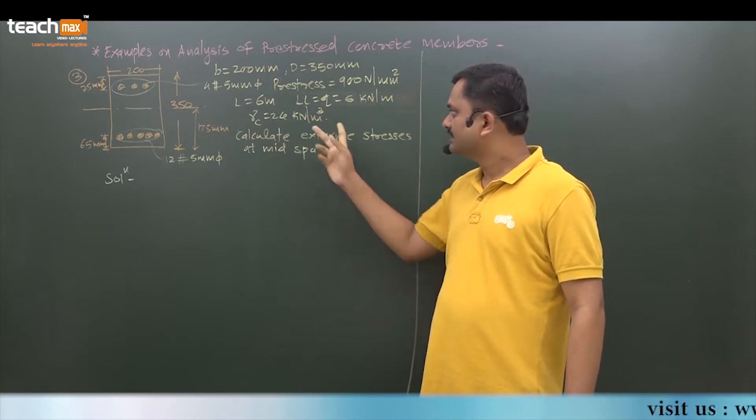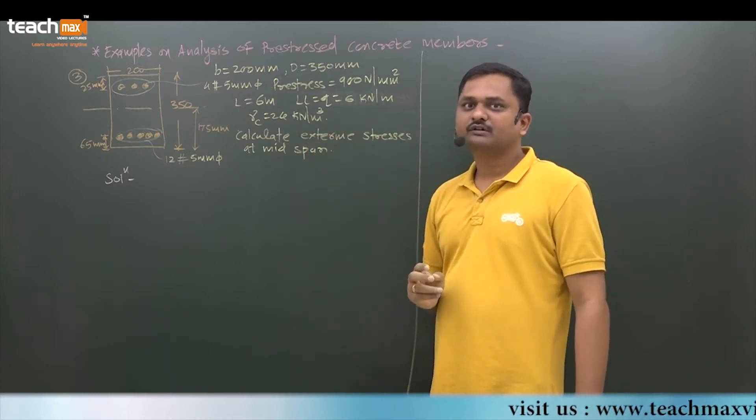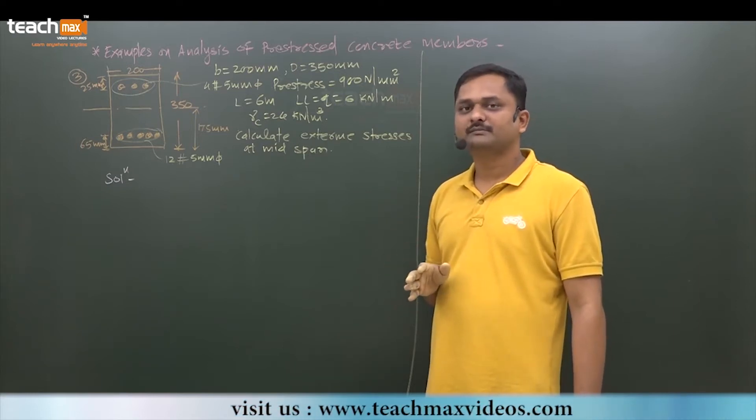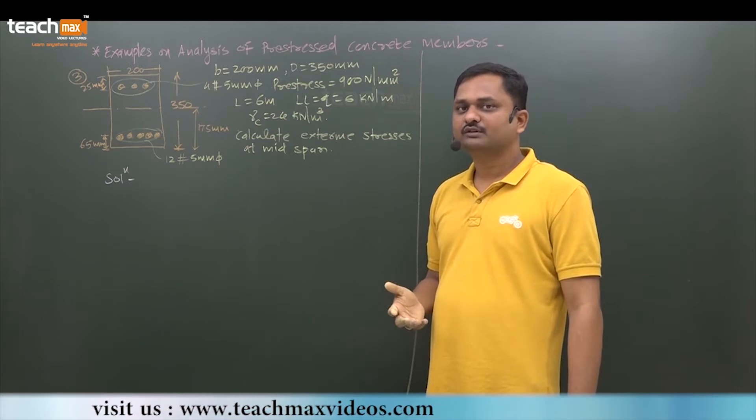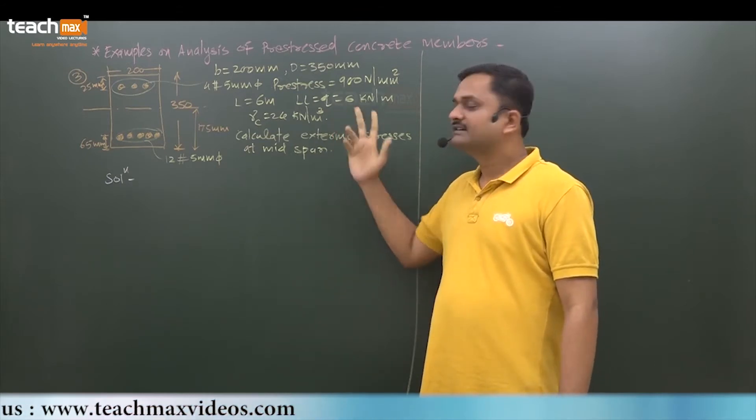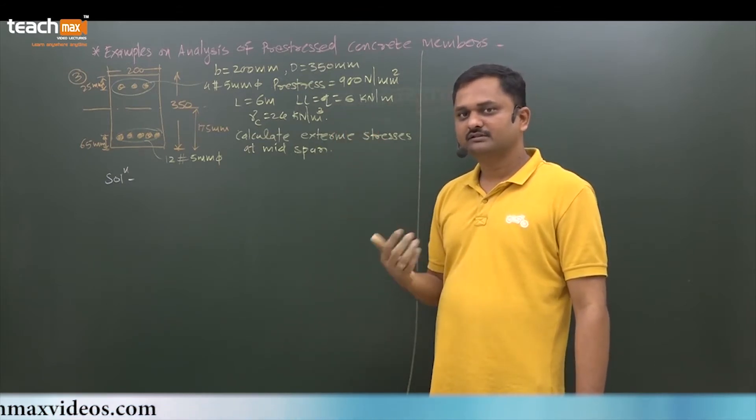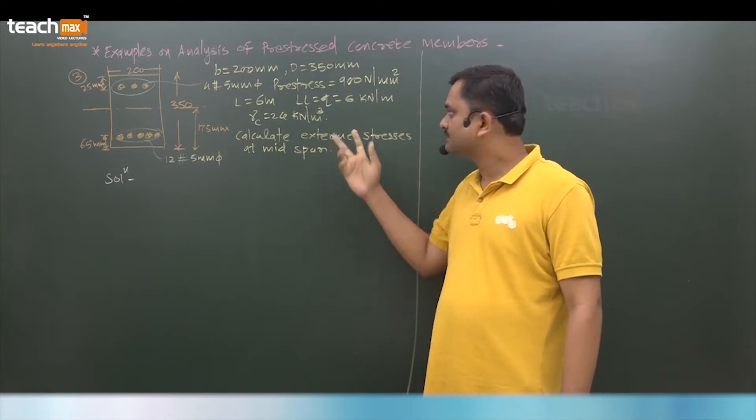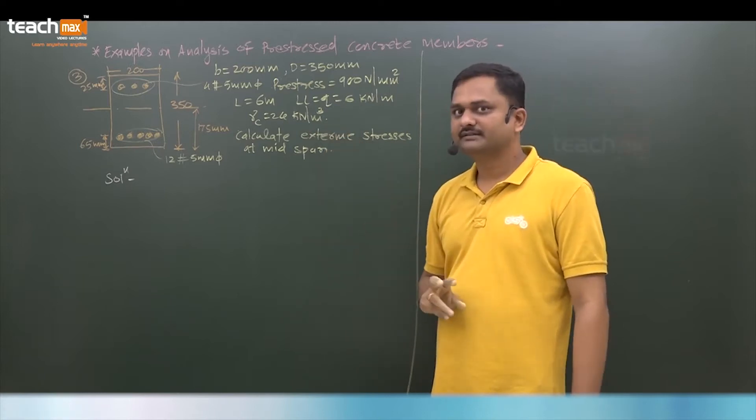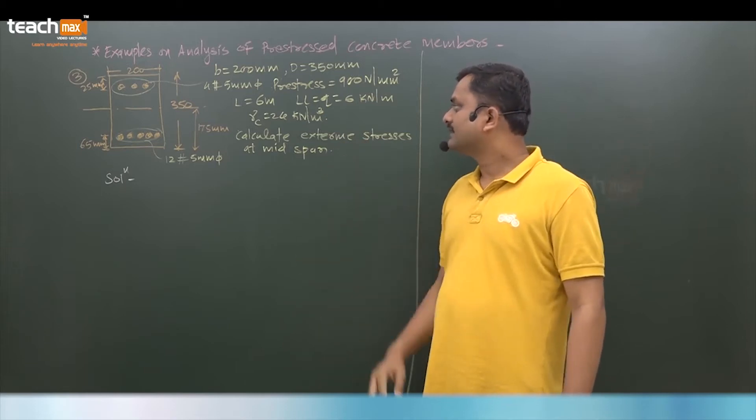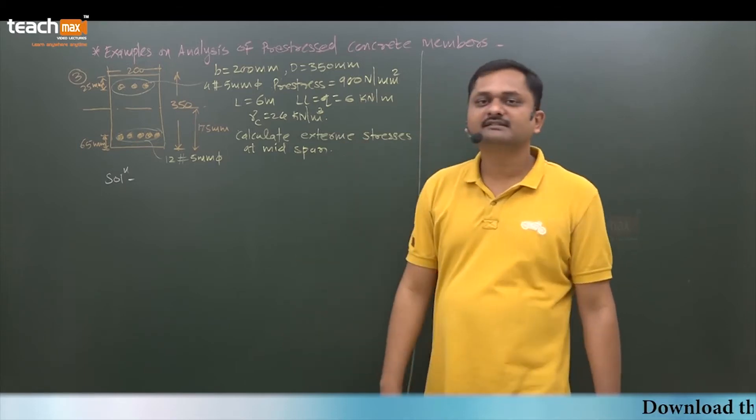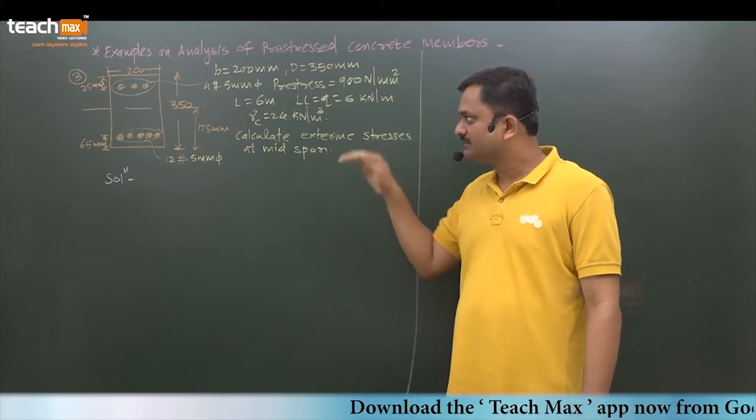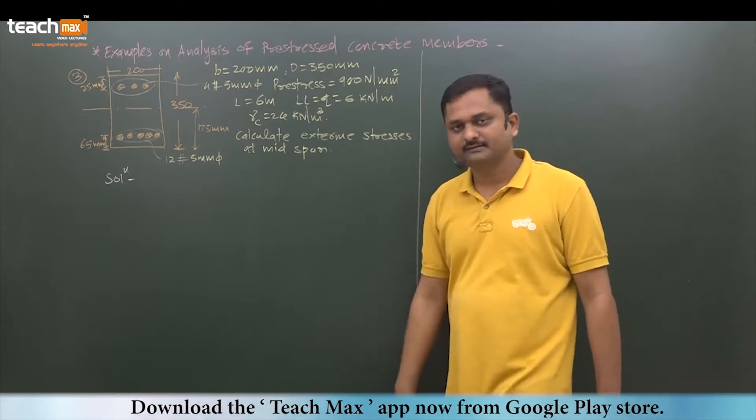The density of concrete is given, so we need to calculate self-weight of the beam separately because live load is directly given. What is asked: calculate the extreme stresses developed at mid span - stresses in the extreme fiber, top and bottom fiber at mid span.